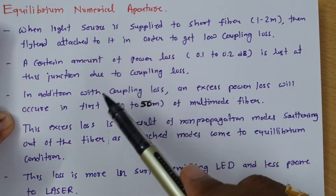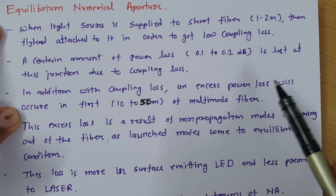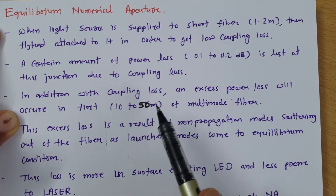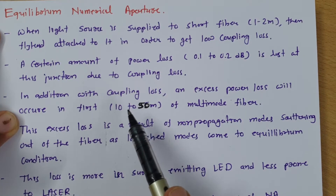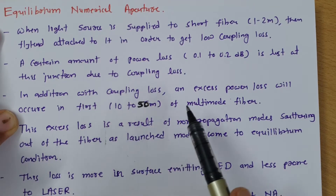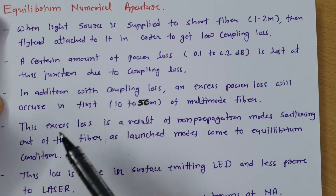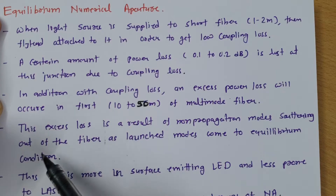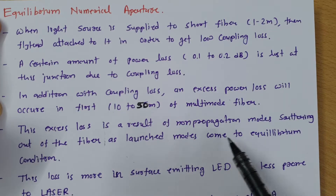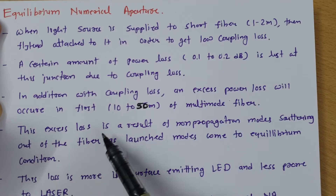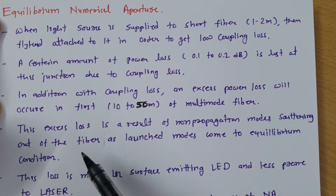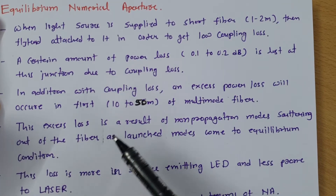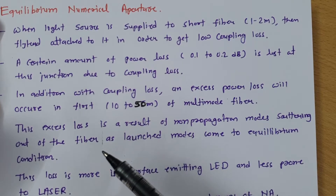But in addition to that coupling loss, some excess power loss will occur in the first 10 to 50 meters of multimode fiber. This excess loss is a result of non-propagating modes scattering out of the fiber as the launch mode comes to equilibrium condition. So this excess loss happens because of scattering of modes in the multimode fiber, and that power gets lost out of the fiber as you go further distance.